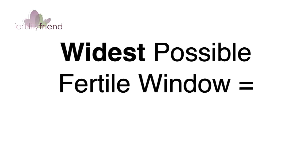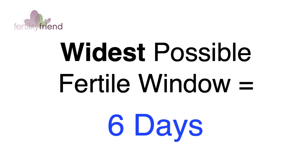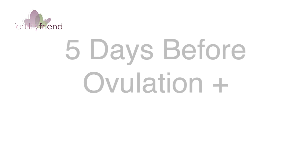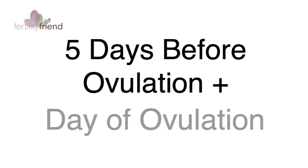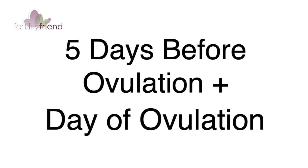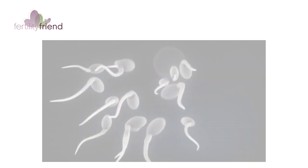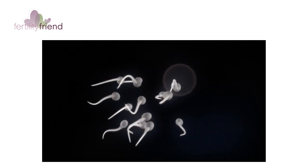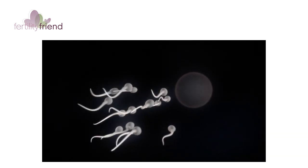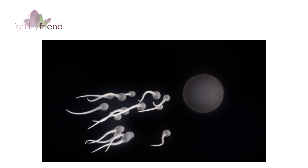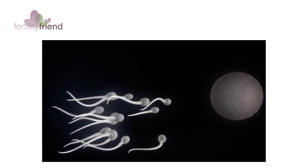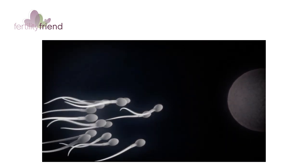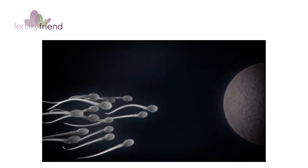The absolute maximum fertile window, based on the combined maximum lifespan of human sperm and egg, is six days. These days are the five days before ovulation and the day of ovulation. This is because sperm can survive in the female reproductive tract in favorable conditions for up to five days after intercourse and can be waiting there when the egg is released at ovulation.